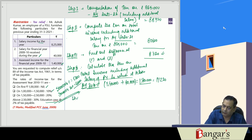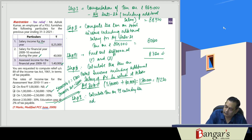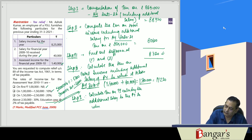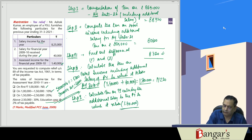Step 5: Calculate the tax on total income excluding the additional salary of the previous year to which it relates. That gives ₹1,40,000. The tax on ₹1,40,000 works out to ₹4,080.